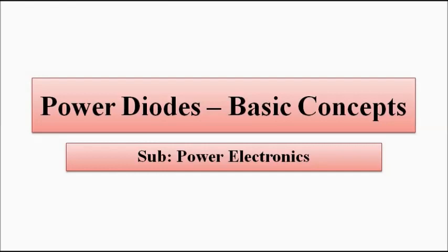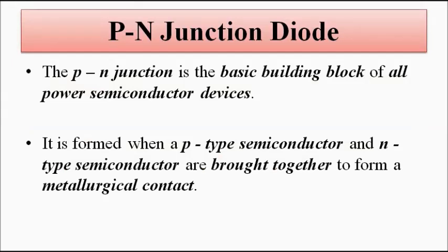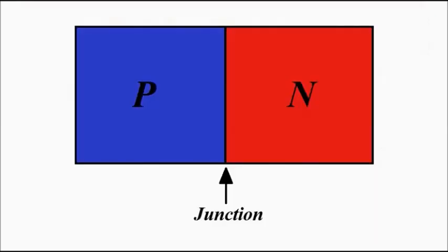We have already discussed the PN junction diode in the analog electronics section. The power diode is actually a PN junction diode, which is the basic building block of all semiconductor devices. It is formed by bringing together a P-type semiconductor and an N-type semiconductor by the process of sandwiching, forming a metallurgical contact. I've already discussed P-type and N-type semiconductors in semiconductor physics and analog electronics, so you can watch those videos for detail.